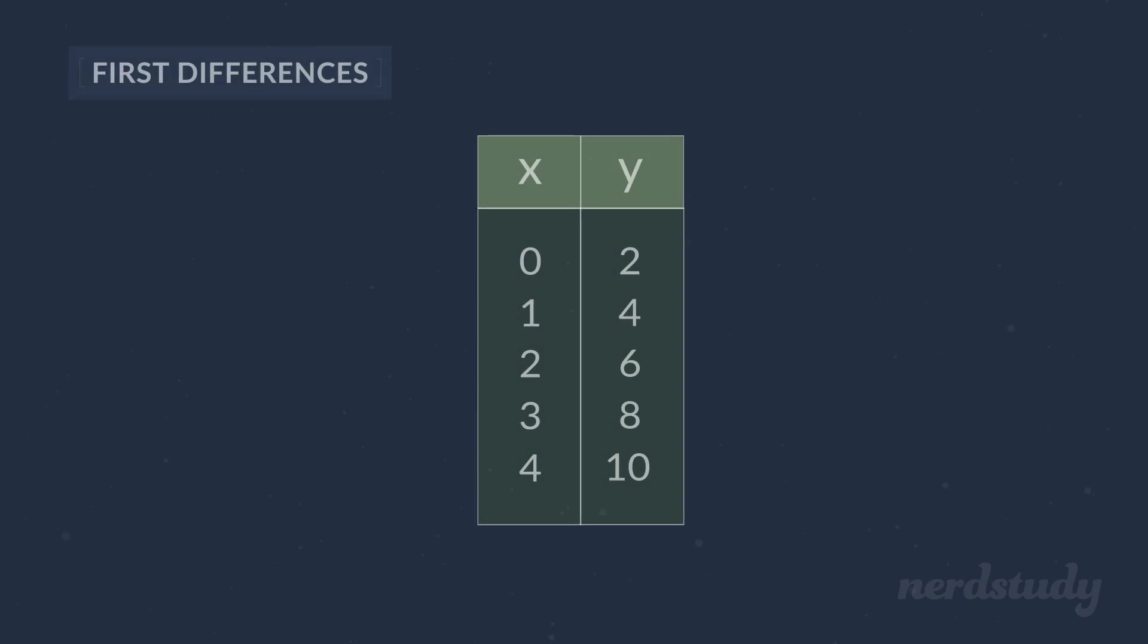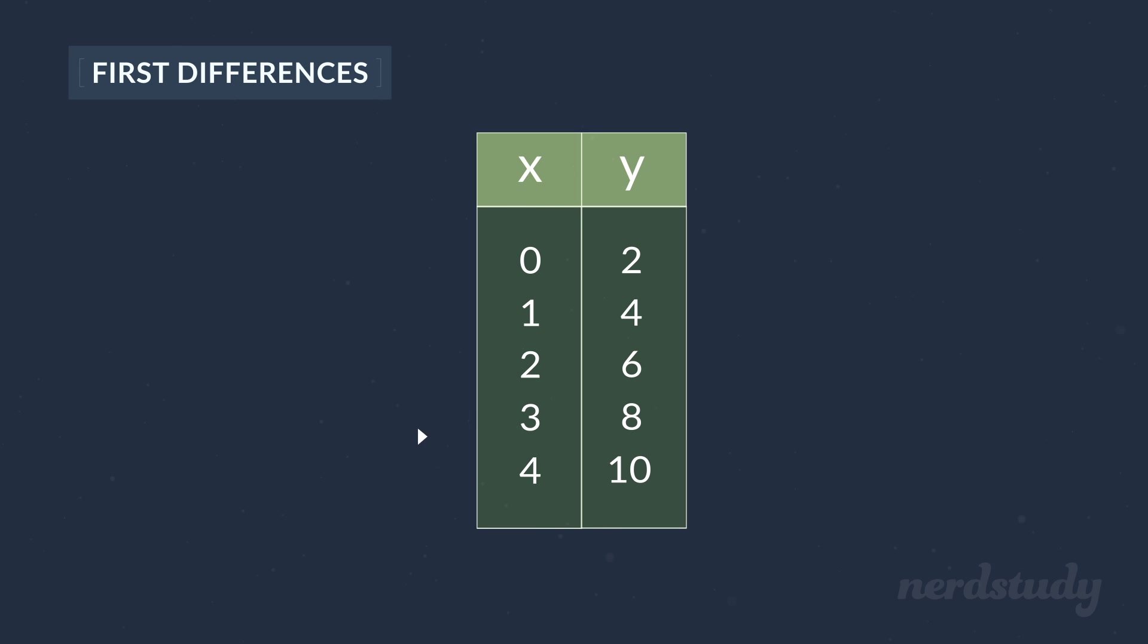First, we make sure that we've got evenly spaced out x values for our coordinates. If the x values are not evenly spaced out by value, then we won't be able to use the table of values to find the first differences correctly. As we can see, these coordinates are going up by one in value for the x column, so this is done right.